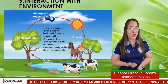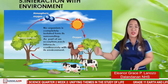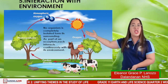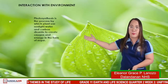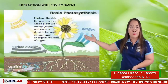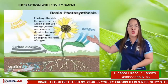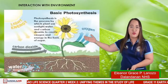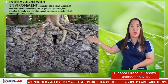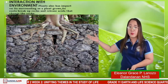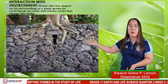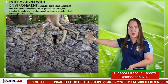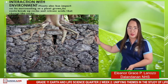For number five, interaction with environment. No organism is completely isolated from its surroundings. As part of an ecosystem, each organism interacts continuously with the environment. Like photosynthesis — the process by which plants use sunlight, water, and carbon dioxide to create oxygen and energy in the form of sugar. Plants also have an impact on their surroundings: the roots of plants grow into rocks, releasing acid that changes the rocks.